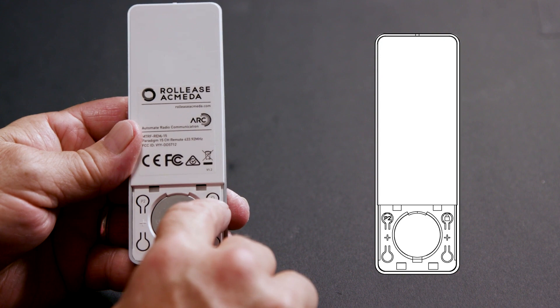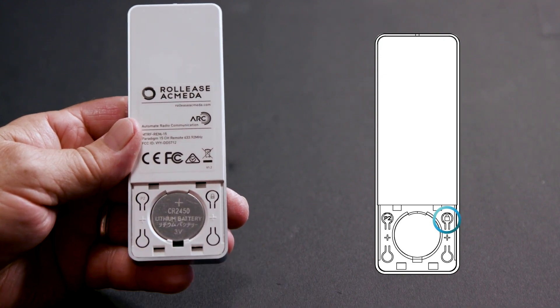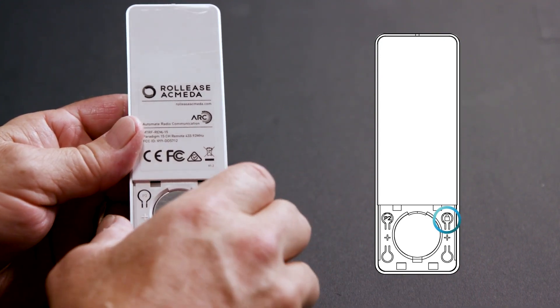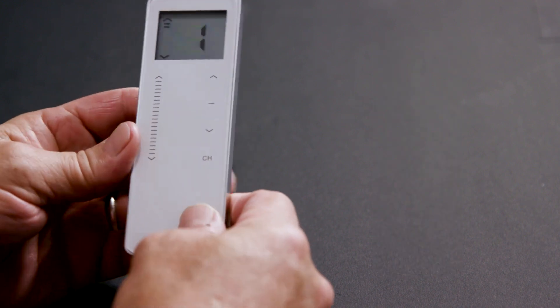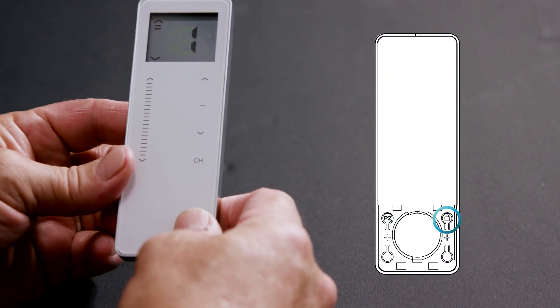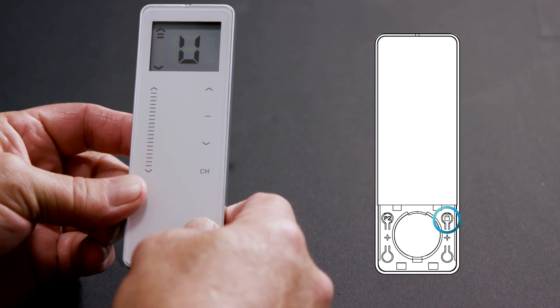To see if the remote is locked, remove the battery cover and locate the lock button. Turn over the remote and press the lock button. The remote will display a U for unlocked or L for locked.